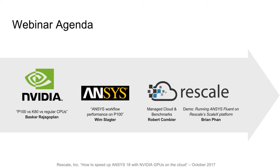To help tell this story, we've handpicked some of our partners from ANSYS and NVIDIA. We'll hear from Bhaskar Rajagopalan from NVIDIA, who'll share some inside information on the P100, especially versus the incumbent GPU champion, the K80. Next, we'll hear from Wim Slachter, who will share benchmarks on how much faster the P100 can be for a variety of ANSYS workflows. Then I'll give a brief review of using HPC in the cloud, and Brian from Rescale will demo running the P100 on Rescale in ANSYS Fluent.